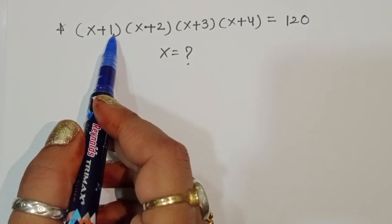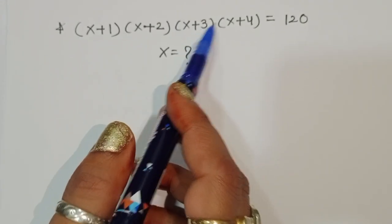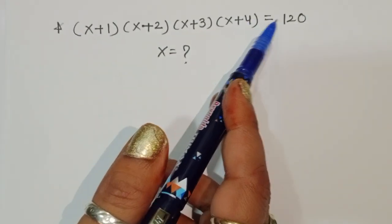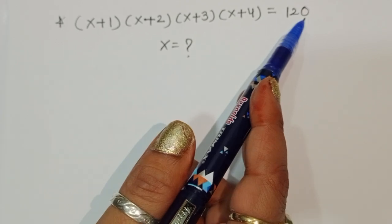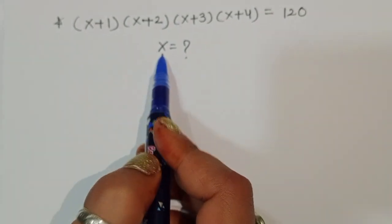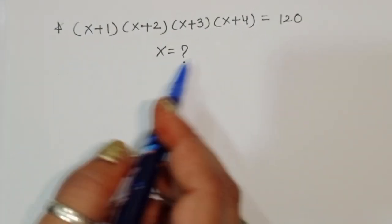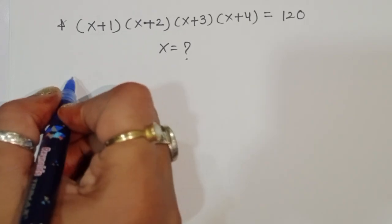Given (x+1)(x+2)(x+3)(x+4) = 120, we have to find out the value of x. Let's see the solution.